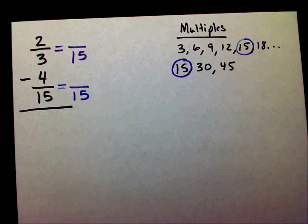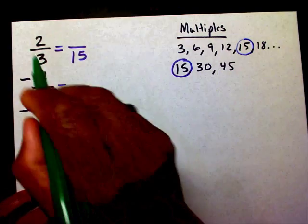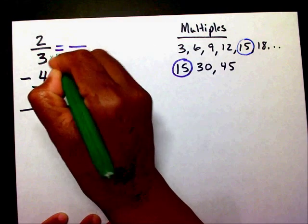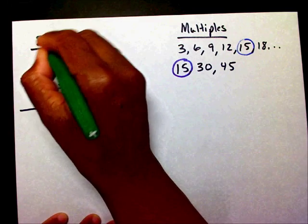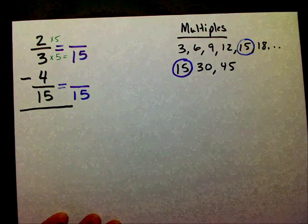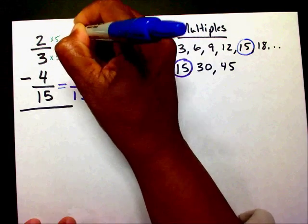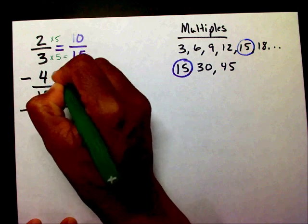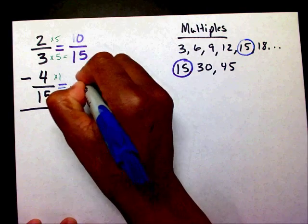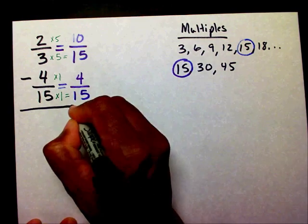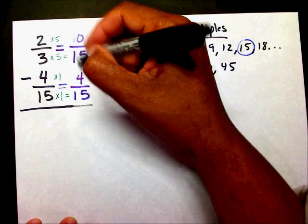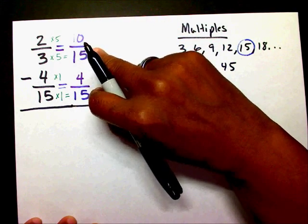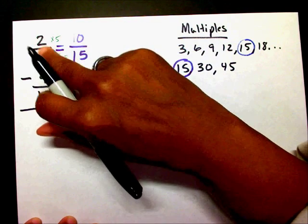Now I need to get a new numerator. I need to know my multiplication facts: 3 times 5 is 15, so I need to multiply 2 times 5, and that's going to give me 10. I know that 15 times 1 equals 15, and 4 times 1 will give me 4. Now I need to subtract my equivalent fractions with the same denominator. Since my denominators are both 15, I can now subtract.